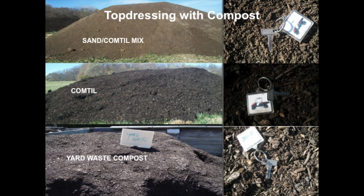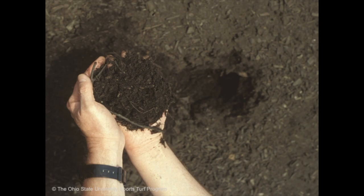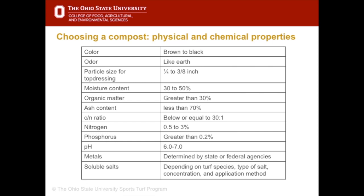Composts are becoming increasingly popular as top dressing materials, on their own or added to sand or soil. On native soil fields, they can help to improve the soil structure and add some nutrient value. As with sands, not all composts are alike. When adding compost to turf, it must contain a bulking agent like wood chips. The bulking agent helps to improve soil drainage and porosity. There are numerous criteria for a good quality compost. The amount of organic matter and the carbon-nitrogen ratio are important.